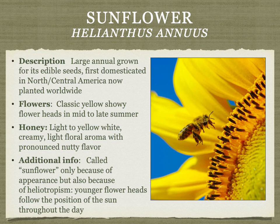Sunflower plants from Central and North America are now planted worldwide for their seeds. The honey is light to yellow-white, creamy, with a light floral aroma and nutty flavor. The name comes from the flower's sun-like appearance and from heliotropism — younger flowers follow the sun throughout the day, pointing east in the morning, overhead at noon, and west by sunset.